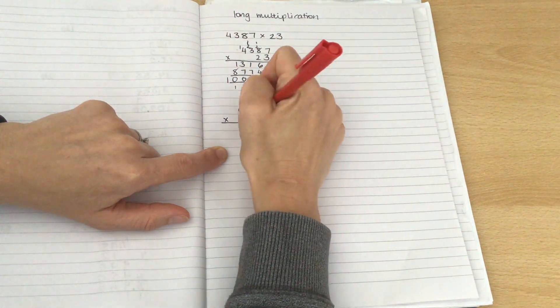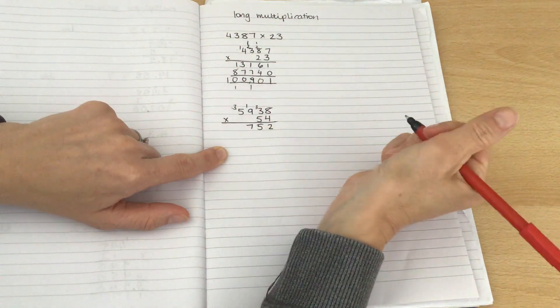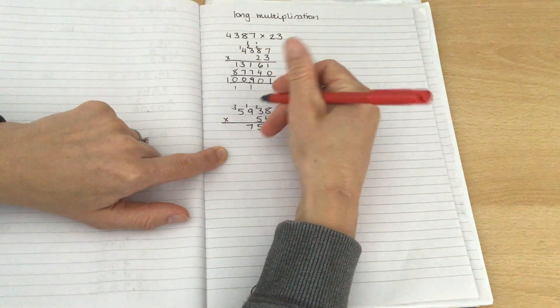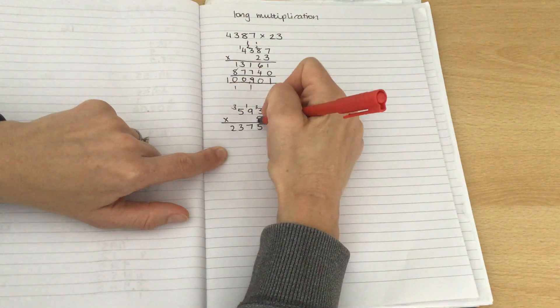4 add 9 is 36. Add the 1 is 37. 4 multiplied by 5 is 20. Add the 3, 23. Okay, I'm finished with that 4.